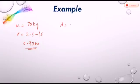We will apply de Broglie equation: lambda is equal to h over mv.